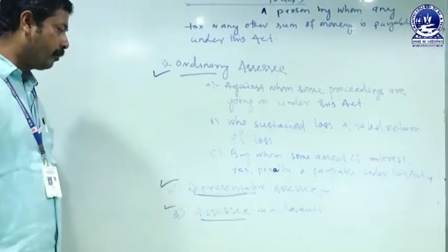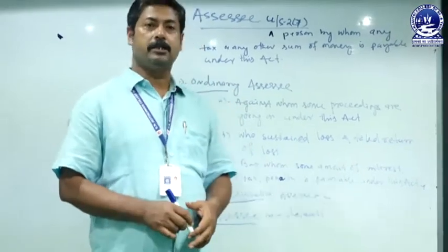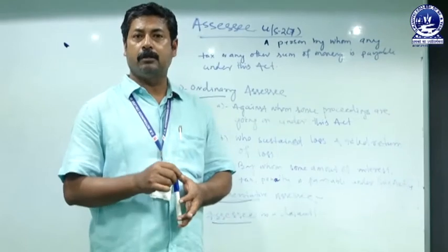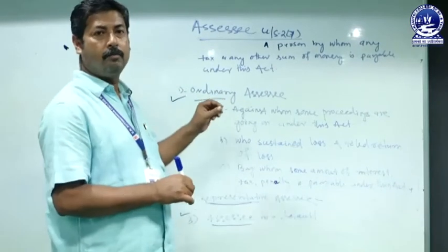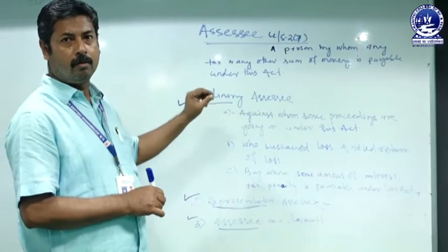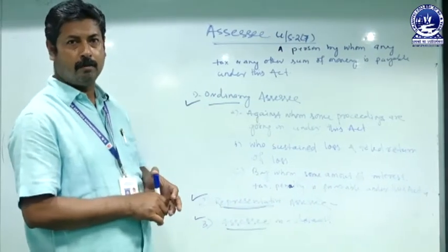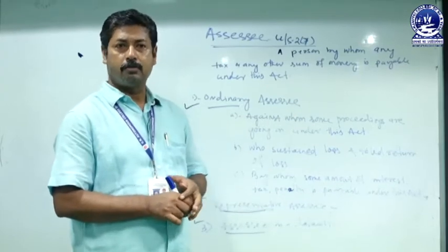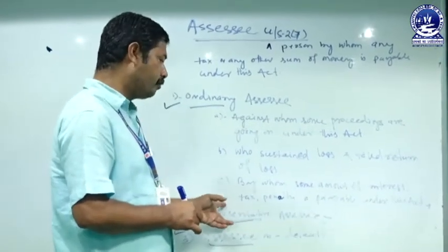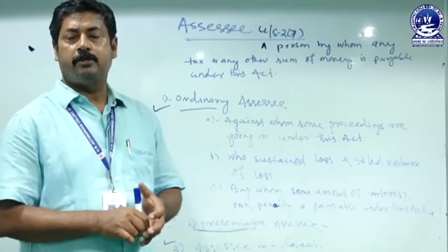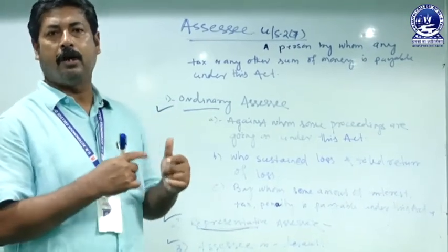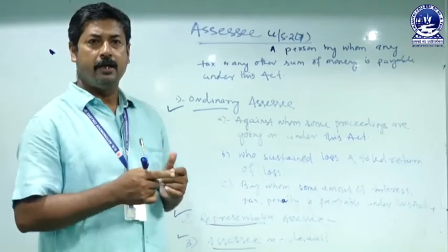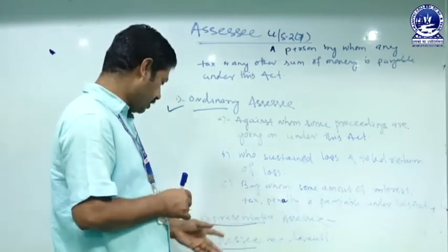The second category is representative assessee. A representative assessee is a person who is not only liable for their own income or own loss, but also liable for the income or loss of any other person. Examples include the guardian of a lunatic person, a minor, or an idiot person, and an agent of a non-resident Indian. These are the representative assessees.